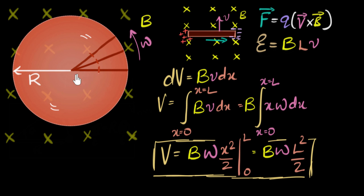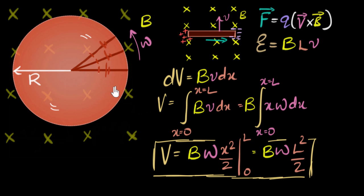Another question: shouldn't we add all the potential differences from the radial pieces? No — since each piece has a potential difference, you can think of each as acting like a tiny battery. But see how all these batteries are connected: they're connected in parallel with each other, with all their ends connected. In parallel, voltages don't add up — they stay the same. For that reason, the potential difference between the center and the edge, anywhere you take, is B·omega·R²/2.